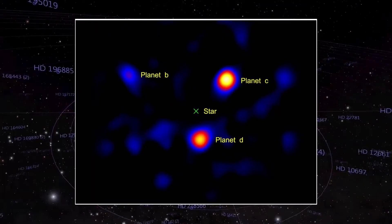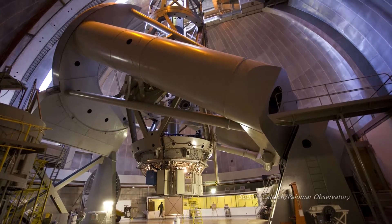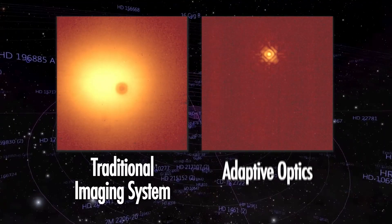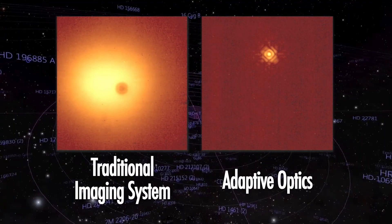This delivers clear, undistorted images to the telescope on the ground. The system also blocks light from the star, allowing them to see the planets.